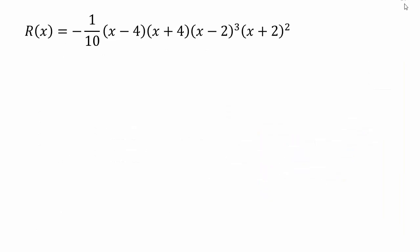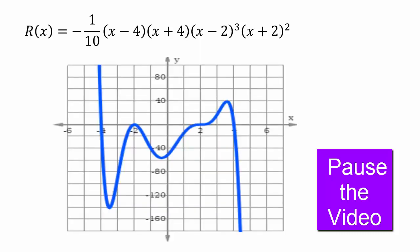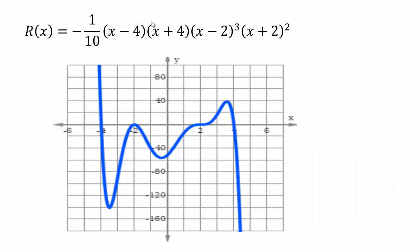Now try the same polynomial but with a negative sign. The end behavior becomes negative x^7, so the left hand is up and the right hand is down. The x-intercepts remain the same: negative 4 is linear, negative 2 is parabola, 2 is cubic, and 4 is linear — but the overall orientation of the graph is flipped.